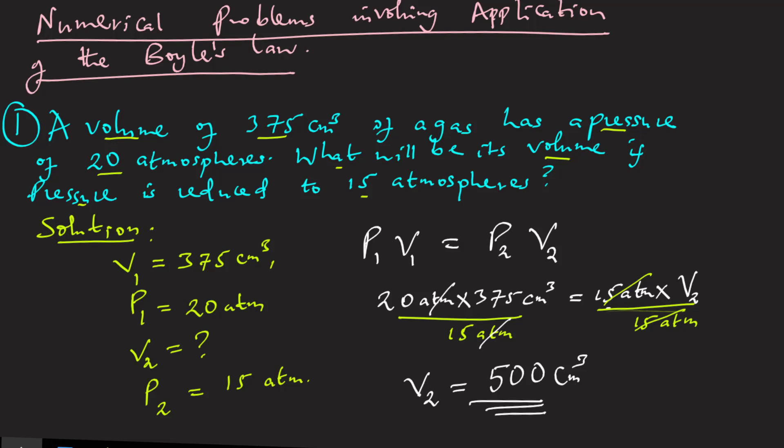From our question, we can say that the volume when the pressure becomes 15 atmospheres will be 500 cubic centimeters. You can see that when we reduce the pressure, the volume increases — the volume increased from 375 to 500 when the pressure reduced from 20 atmospheres to 15 atmospheres.